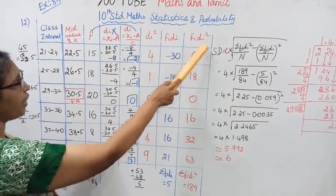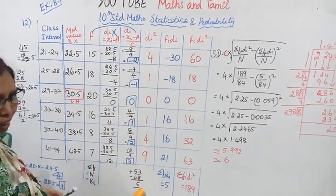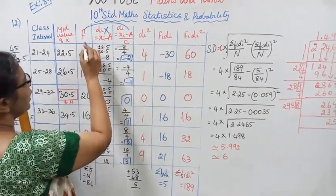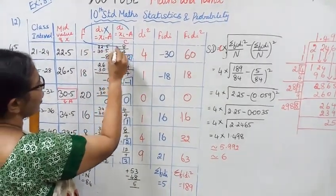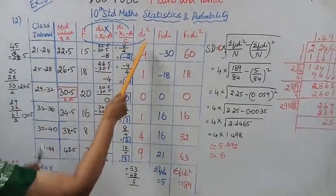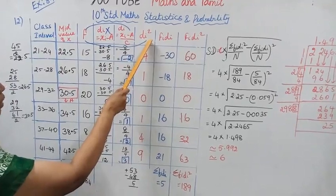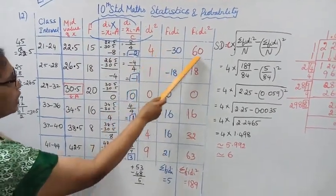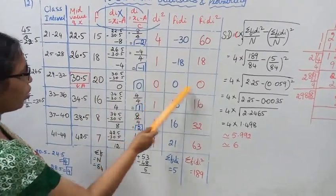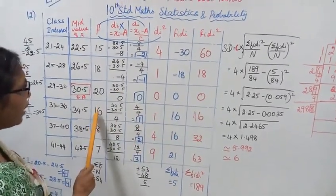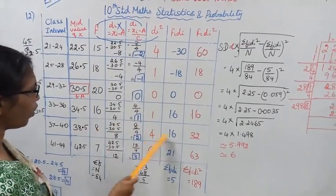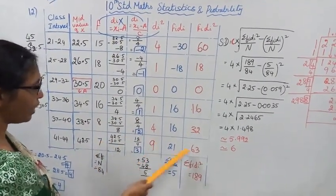Now for fi times da squared, we multiply fi by da squared: 15 × 4 = 60, 18 × 1 = 18, 20 × 0 = 0, 16 × 1 = 16, 18 × 4 = 72, 7 × 9 = 63. We now find the sum of fi·da squared.